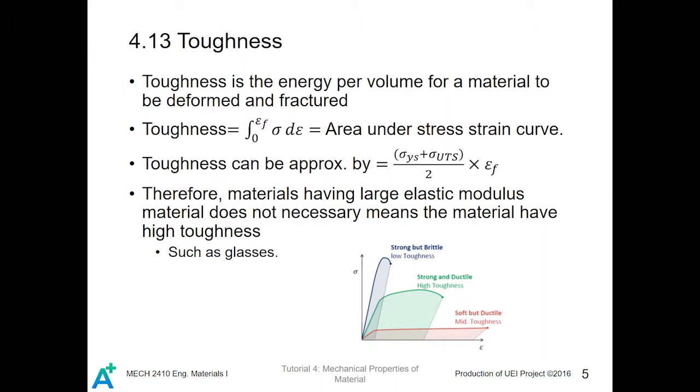Toughness is the energy per volume for a material to be deformed and fractured. Toughness is defined as the integral from the strain at failure to zero of the stress value d-strain, which is also the area under the stress-strain curve.